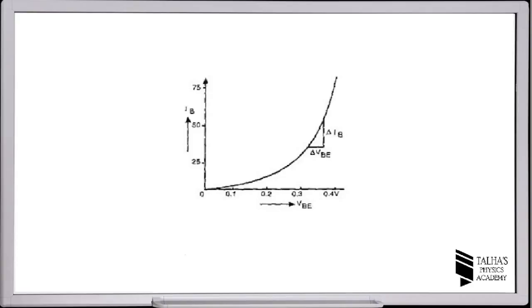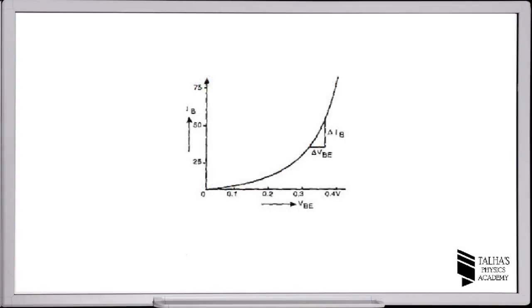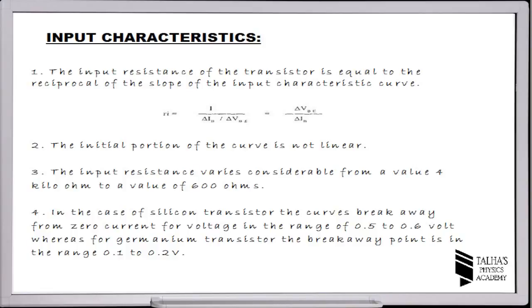As is clear in the figure, this graph is known as the input characteristic of an NPN transistor. From this graph we can study four points. Number one: the input resistance of the transistor is equal to the reciprocal of the slope of the input characteristic curve. As you can see in the picture, the resistance is equal to the ratio between the base-emitter voltage and the base current.